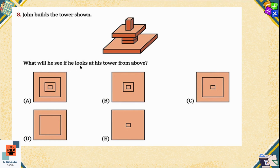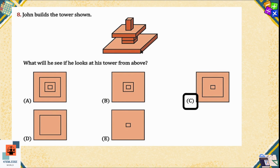Question number eight: John builds a tower. What will he see if he looks at his tower from above? If he is looking from above, he will see the rectangle in the center first, then the second rectangle. He cannot see the third and fourth rectangles, which are hidden under the second one, and then he will see the rectangle of the base. From the top, he will see three rectangles, which are given in option C. That is the correct option.